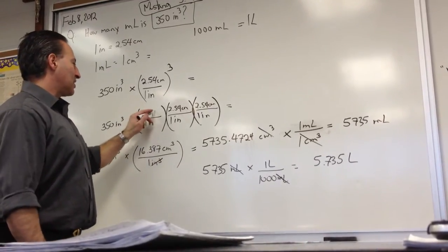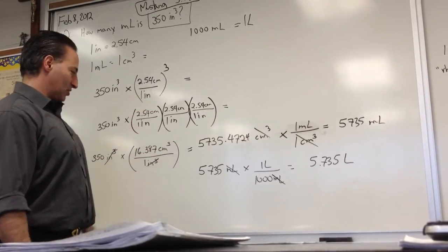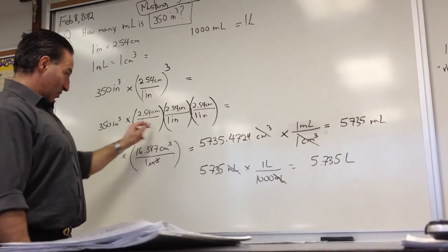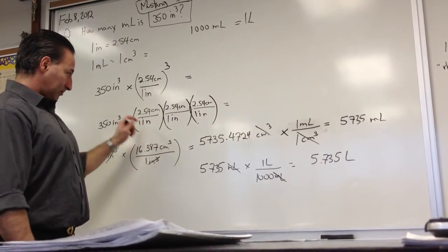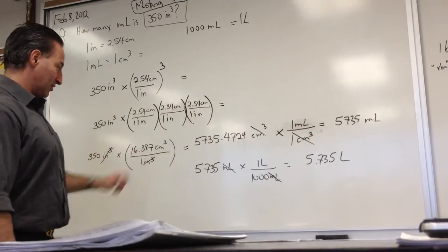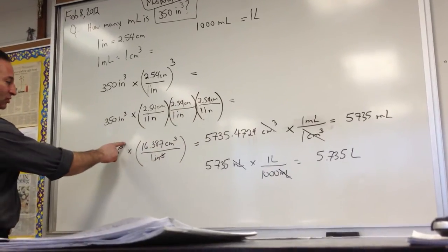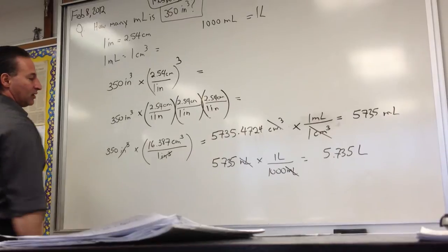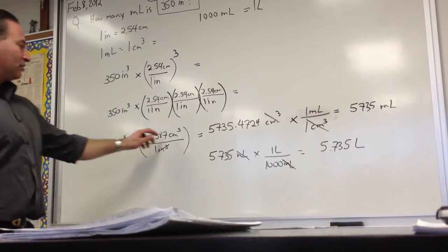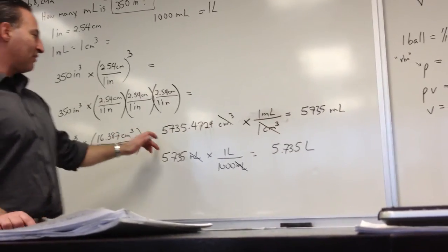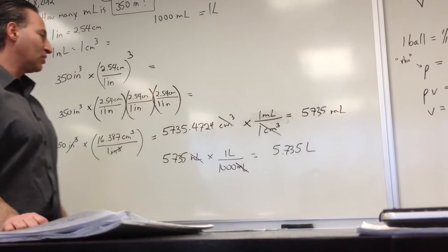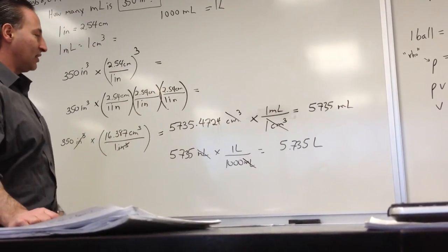Centimeters times centimeters times centimeters is going to give you centimeters cubed. Same with the denominator. 1 times 1 times 1 gives you 1. Inches times inches times inches gives you inches cubed, which now allows you to cancel inches cubed right off the bat. And you're just going to leave an answer in centimeters cubed. So we have 5,735 centimeters cubed. And that equals 350 inches cubed.